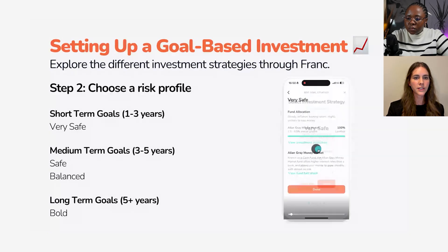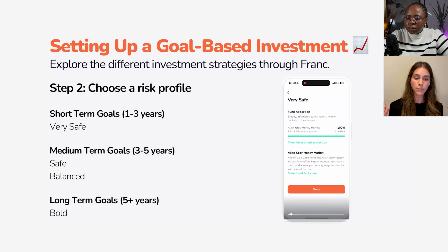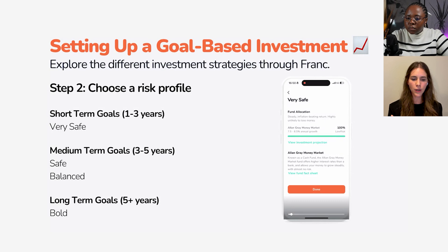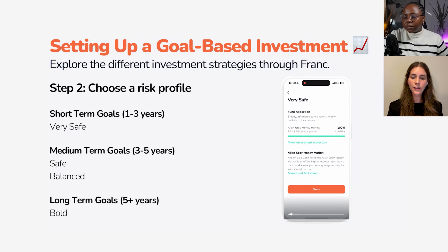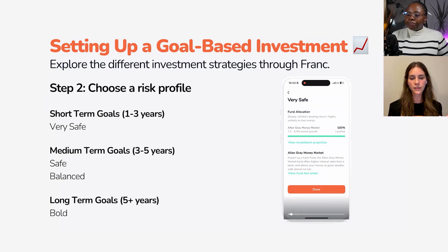The next part is investment strategies. When you inputted a million rand as your target amount and said you wanted to reach that in 10 years, it gave a Bold strategy. That's hopefully something that makes sense now when we talk about risk profiles matching timelines — 10 years is long term and that means you go Bold.